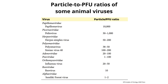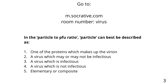Quiz question: the property known as particle-to-PFU ratio — 'particle' can best be described as what? The answer is B — a virus which may or may not be infectious. Because in calculating the particle-to-PFU ratio, we're dividing total physical particles by infectious particles — a particle could be either infectious or not. The infectivity is in the denominator. This is an important concept when studying viruses, because when you do an assay, you don't know if results are from infectious or non-infectious particles.